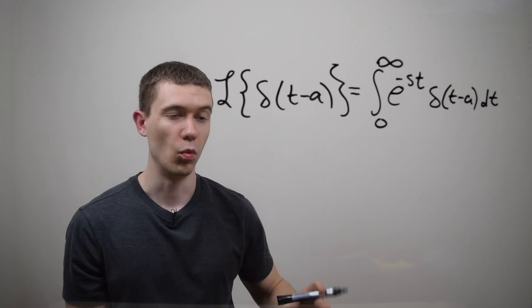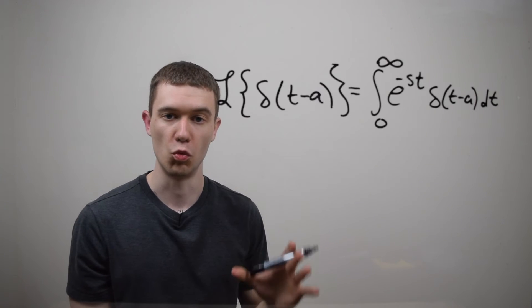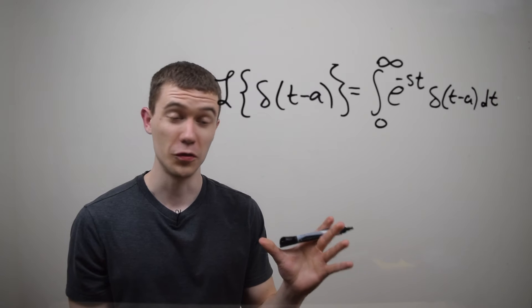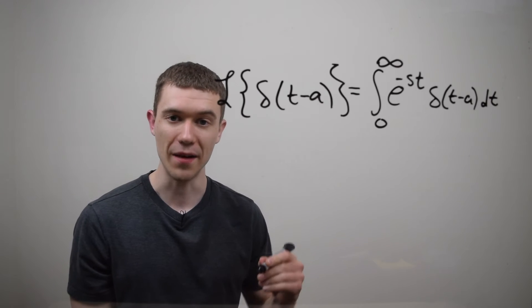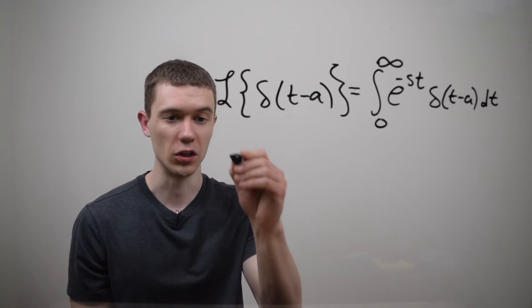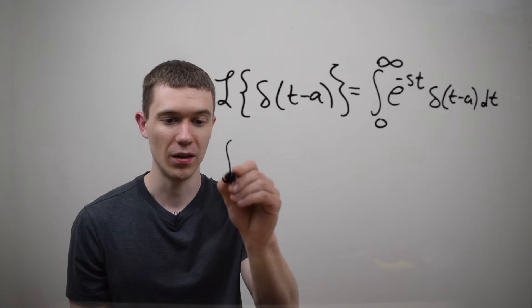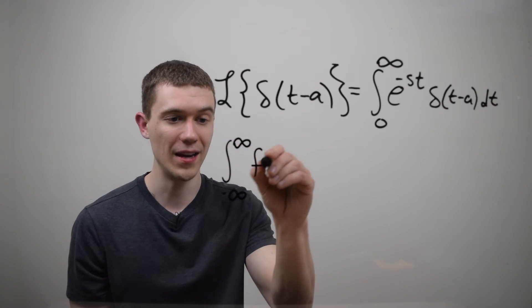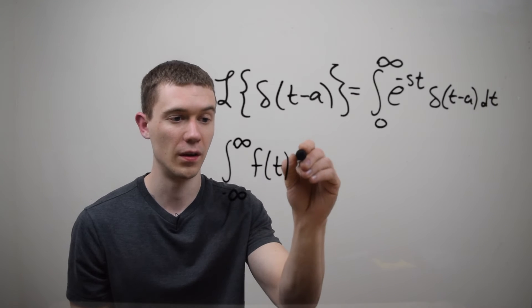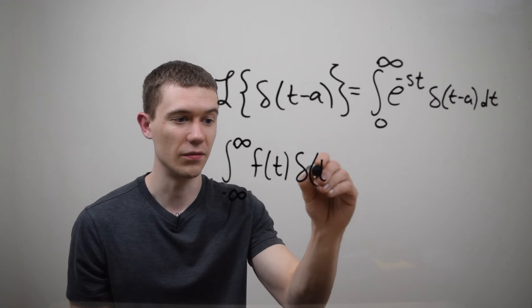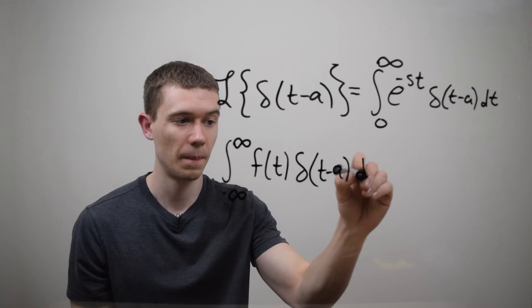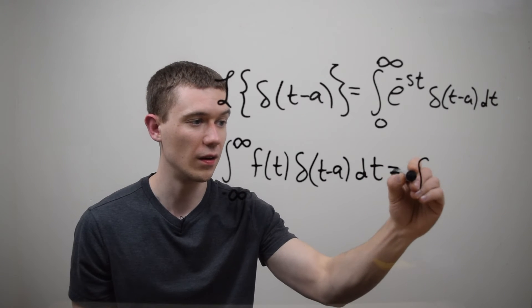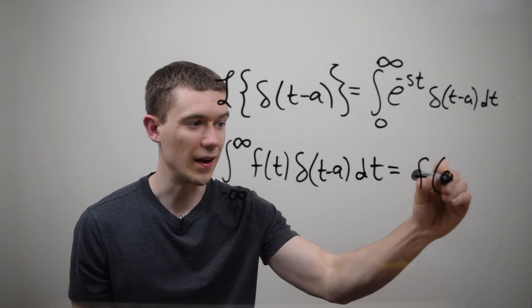Now, when you know how the Delta function works by its definition, there's almost no work to do here. Part of the definition of the Delta function is that if I'm integrating from minus infinity to infinity any type of function times the Delta function, the effect that this has is simply evaluating the function at a.